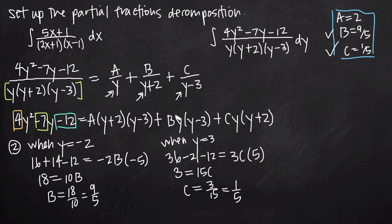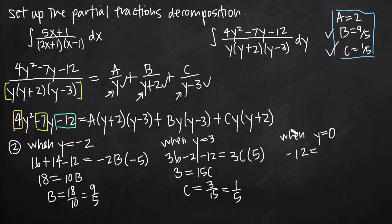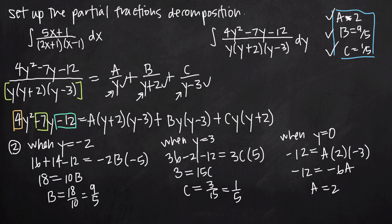Our third factor is just y. What do we set y equal to in order for this factor to be zero? Obviously y equals zero. Plugging zero into the left hand side, we're left with negative 12. On the right, the B and C terms both include the y factor so they disappear, and A is the only one left: a times 0 plus 2 times 0 minus 3 equals a times 2 times negative 3 equals negative 6a. So negative 12 equals negative 6a, giving a equals 2.